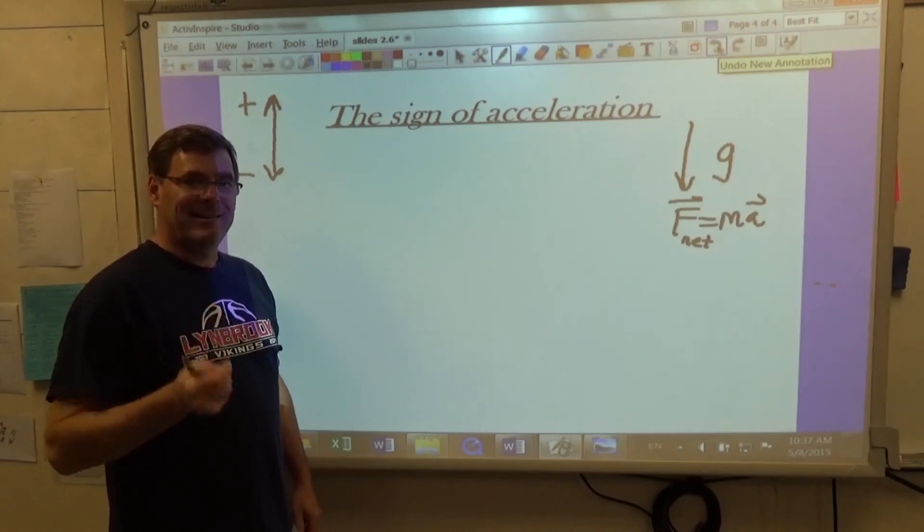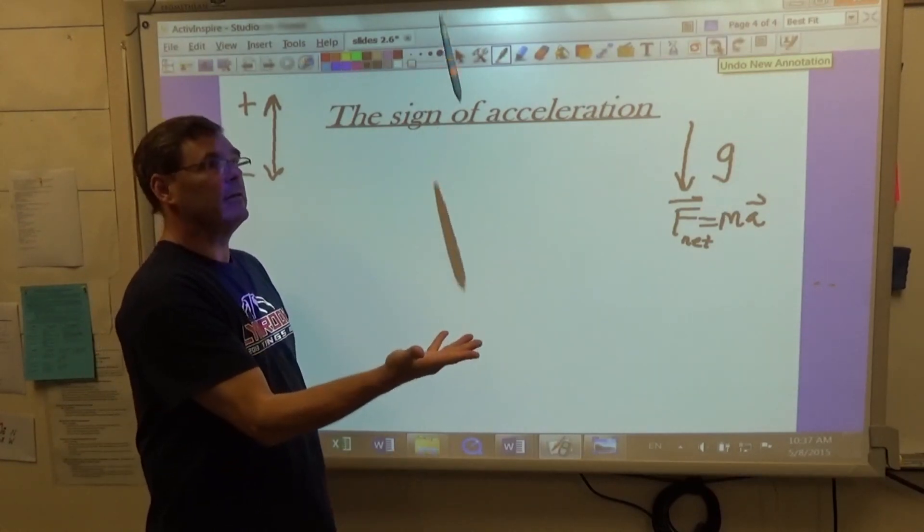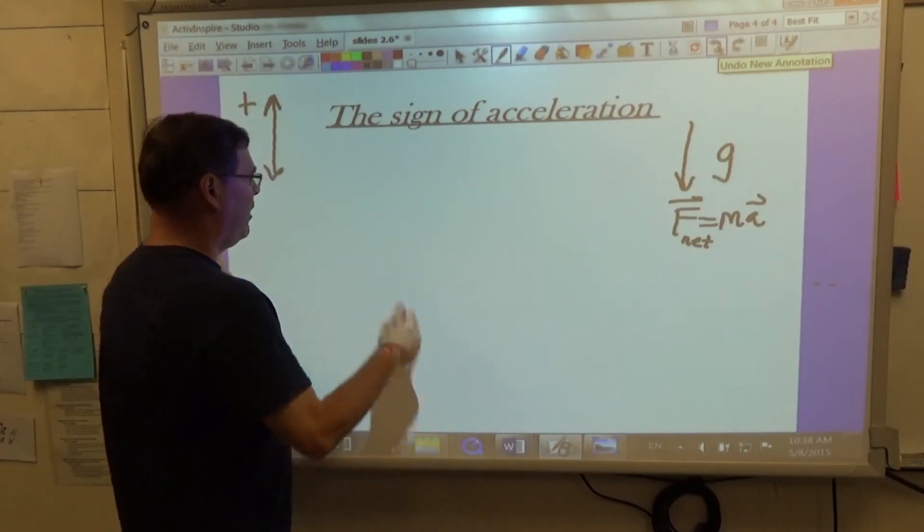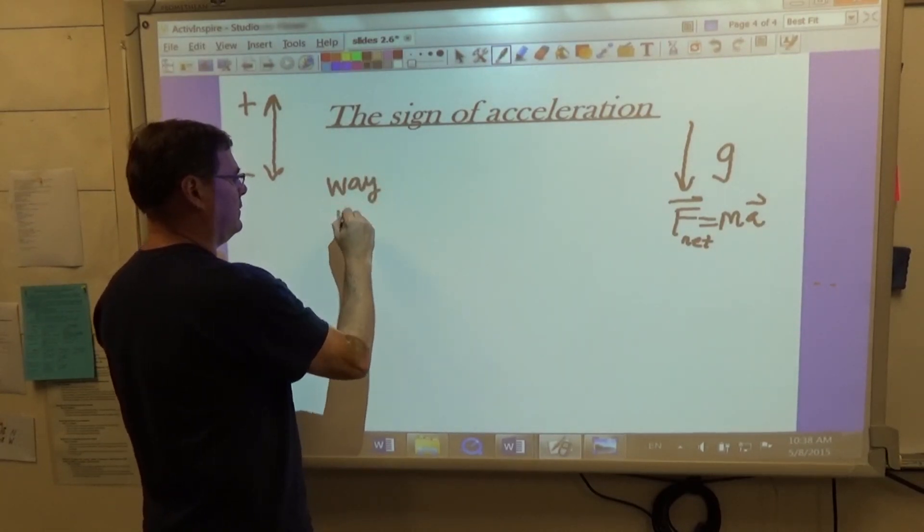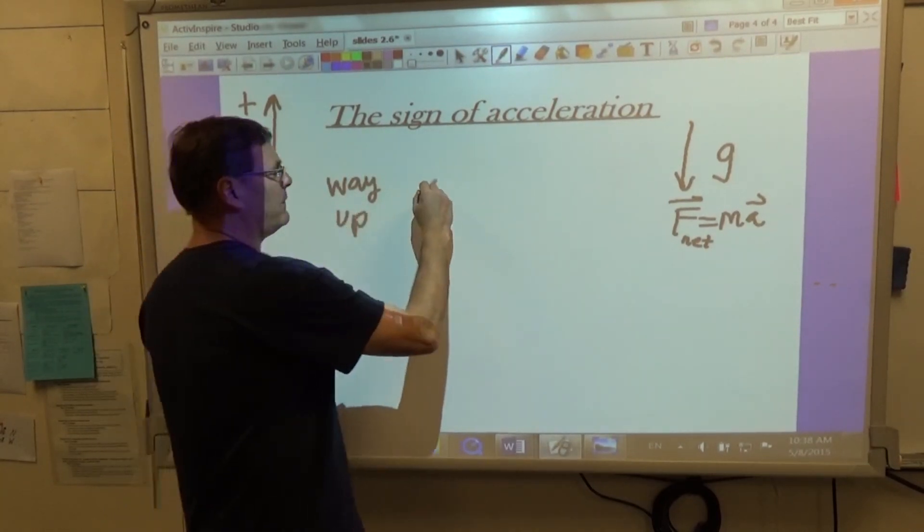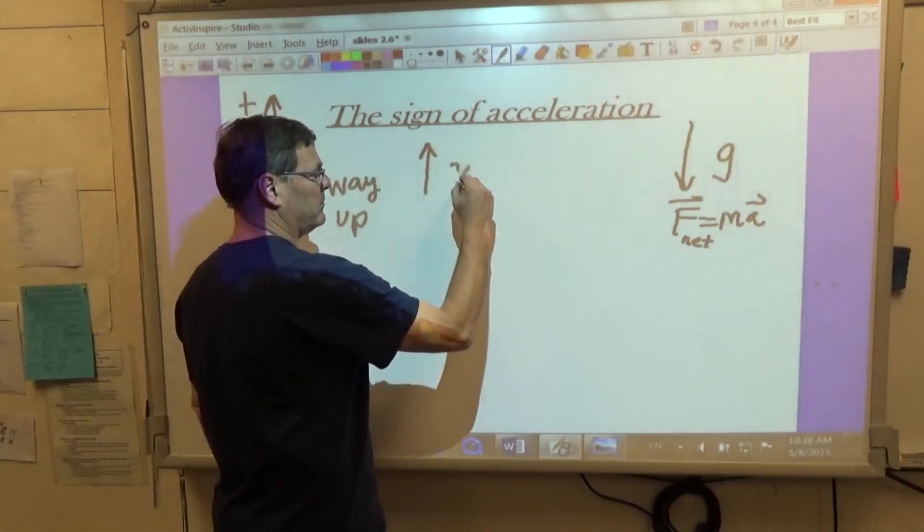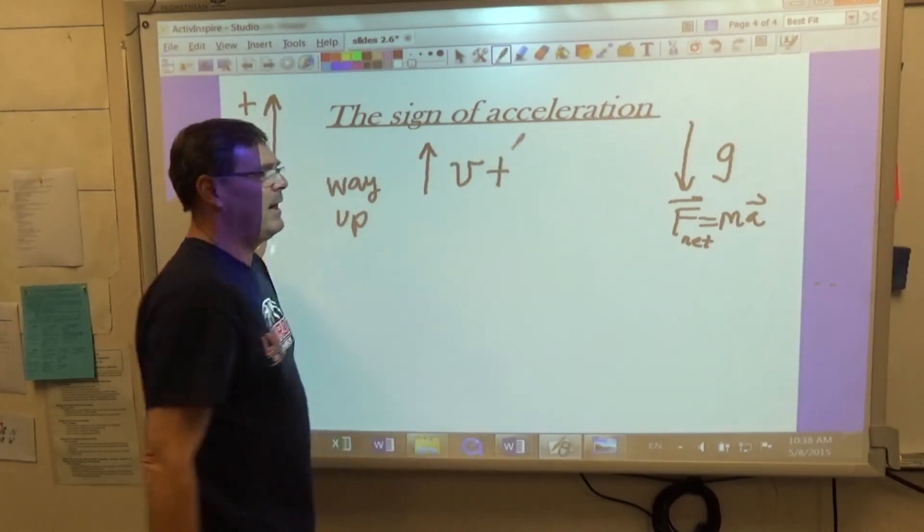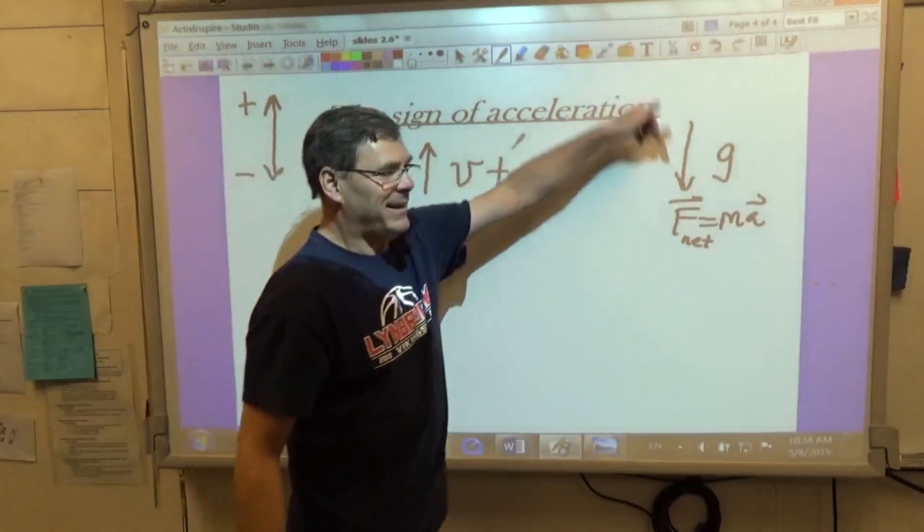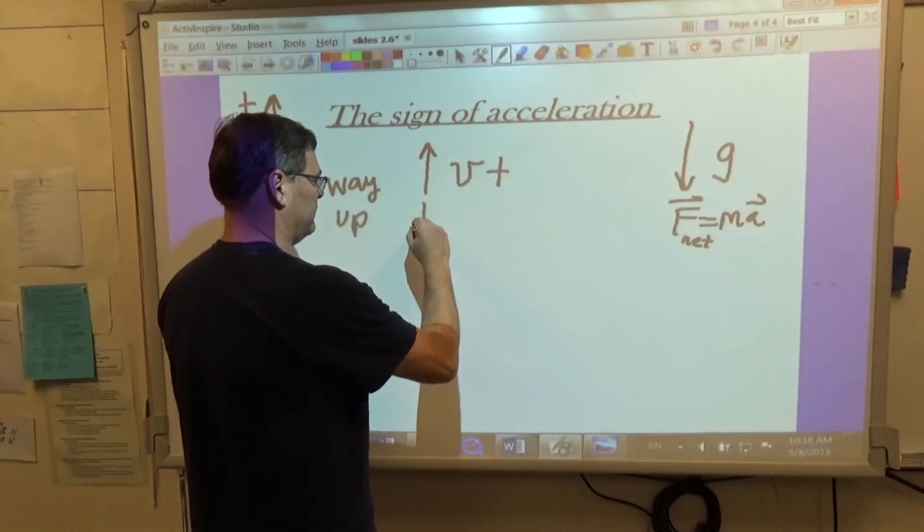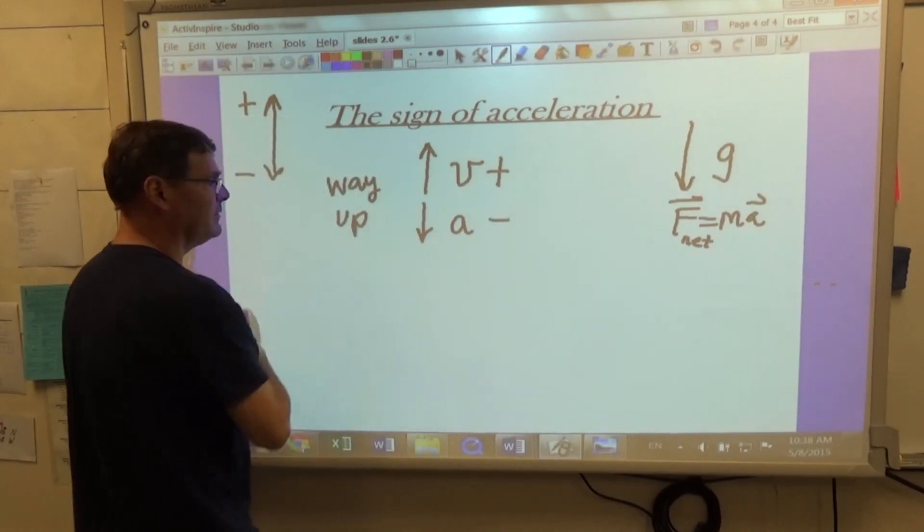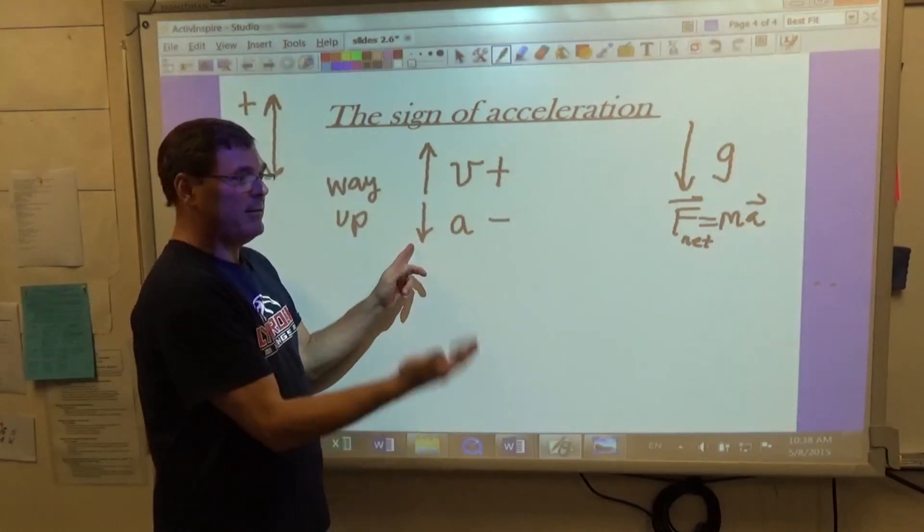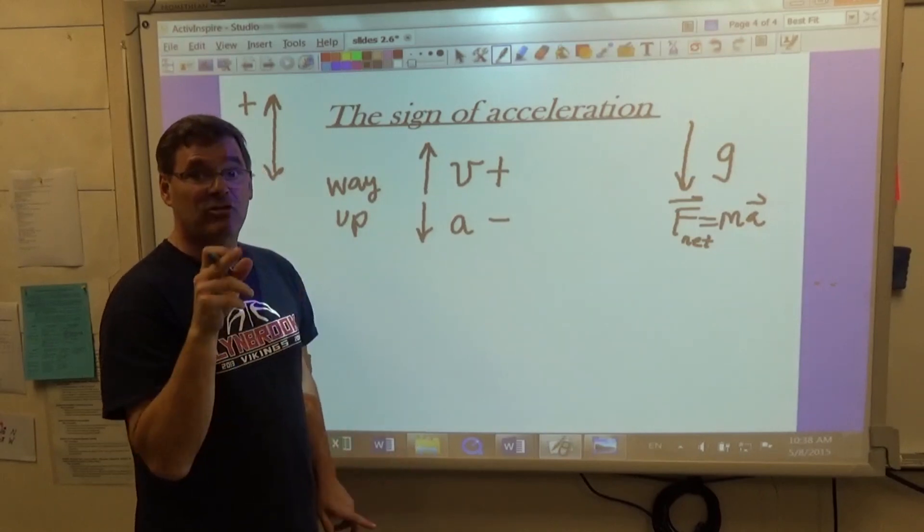Let's look at an example of just throwing an object up into the air. On the way up, the velocity is upwards, so it is positive. But gravity is always down. So the acceleration due to gravity is negative. And while the object is rising in the air, it's slowing down.